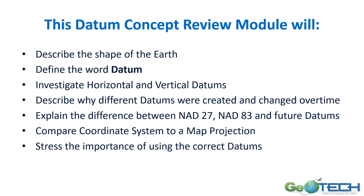We're going to look at the shape of the earth and really define the word datum — what does it mean? We'll look at two specific types of datums, both horizontal and vertical, and we'll look at why there are so many datums and how they've changed over time.